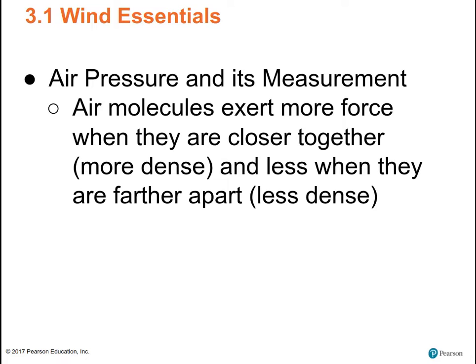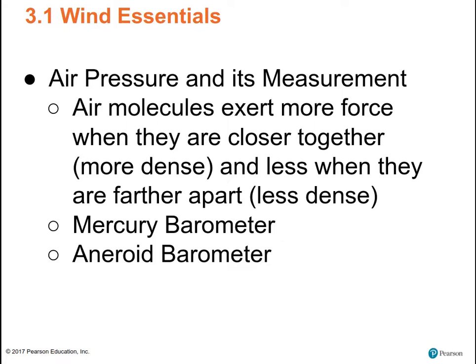Air molecules exert more force when they're closer together and less when they're farther apart. You can use a mercury barometer, but almost nobody uses mercury barometers because they're toxic and can cause brain damage and other neurological problems. Nowadays we use aneroid barometers. Aneroid means without liquid, so it's just a barometer without mercury.